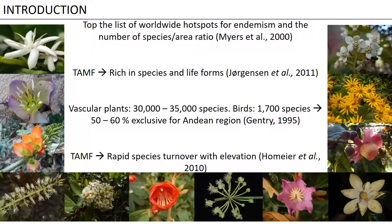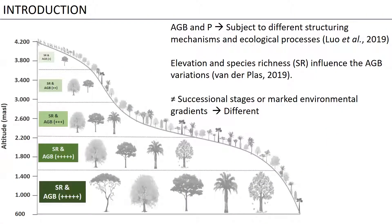The tropical Andean Mountain Forest shows a rapid species turnover with elevation, and this is probably the main factor responsible for this high diversity. Here in these ecosystems, the above-ground biomass and productivity are subject to different structuring mechanisms and ecological processes. For example, elevation and species richness influence the above-ground biomass variation in mountain ecosystems.